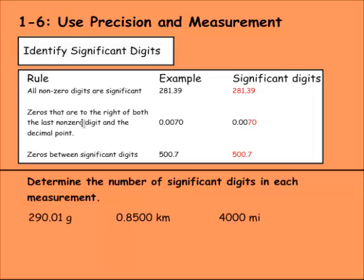These wouldn't be because they're to the left of the last significant digit. And this one is to the left of the decimal and the significant digit. So none of these zeros are significant. But this one is because it fits both of these qualifications.